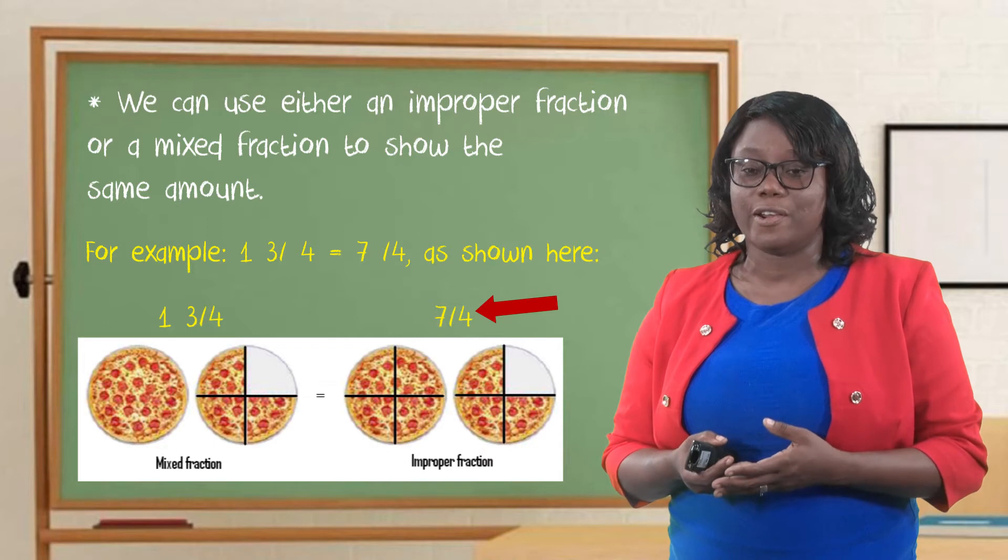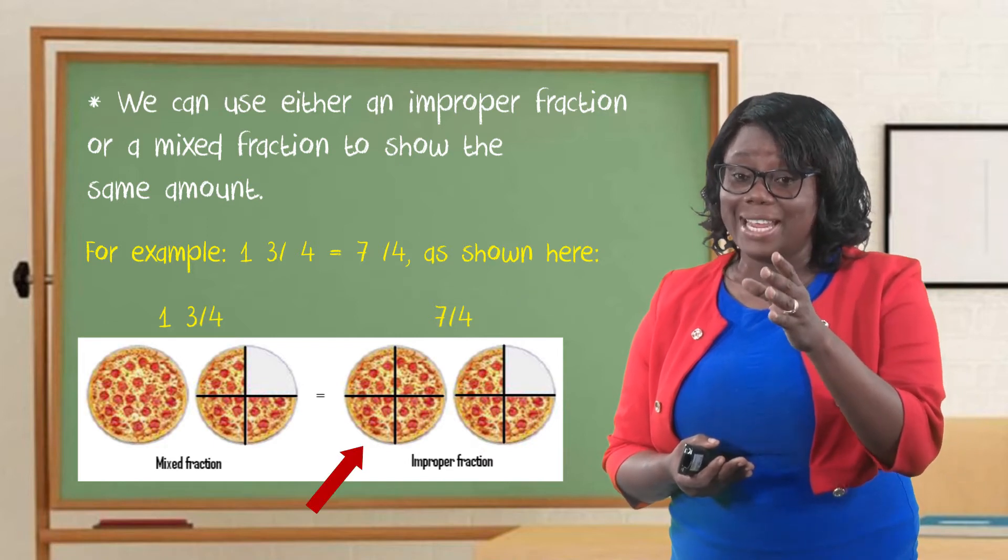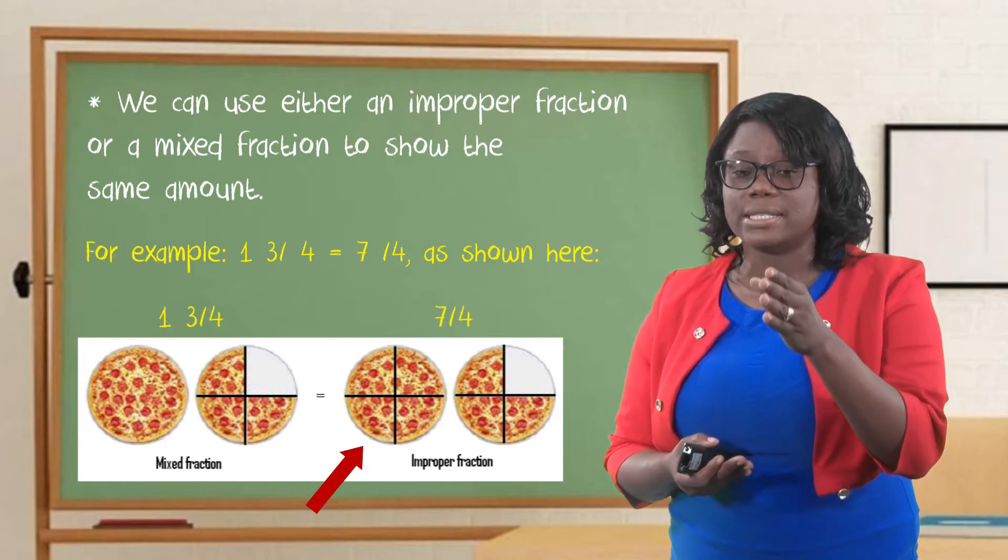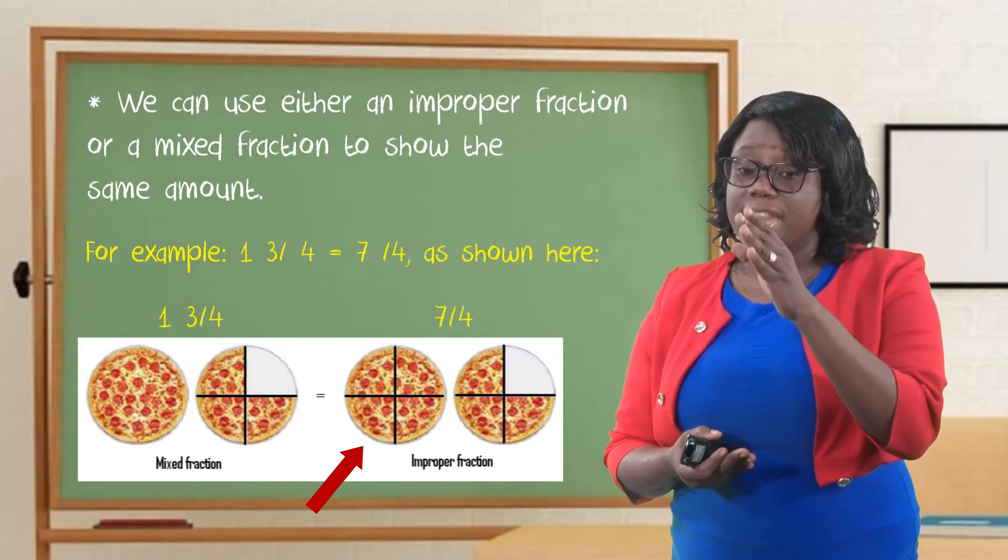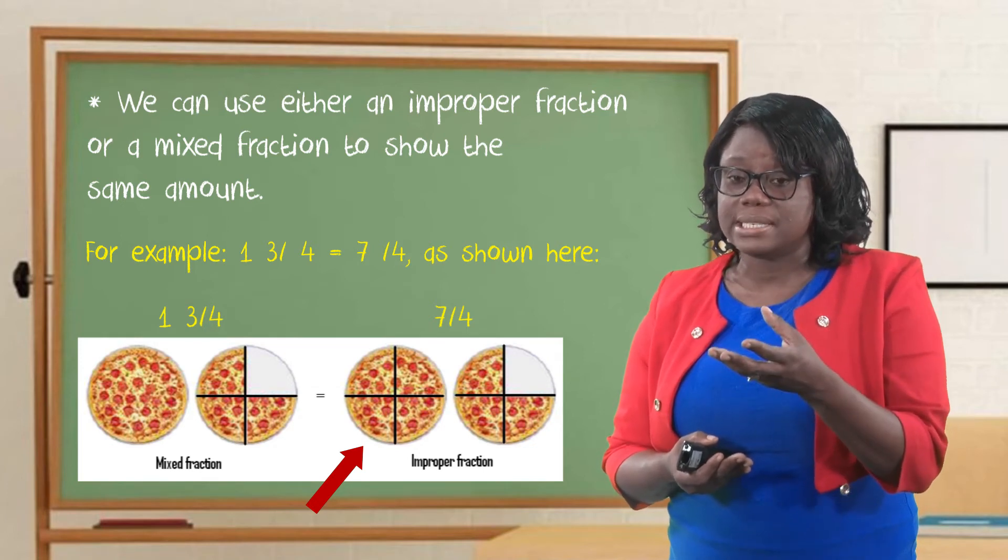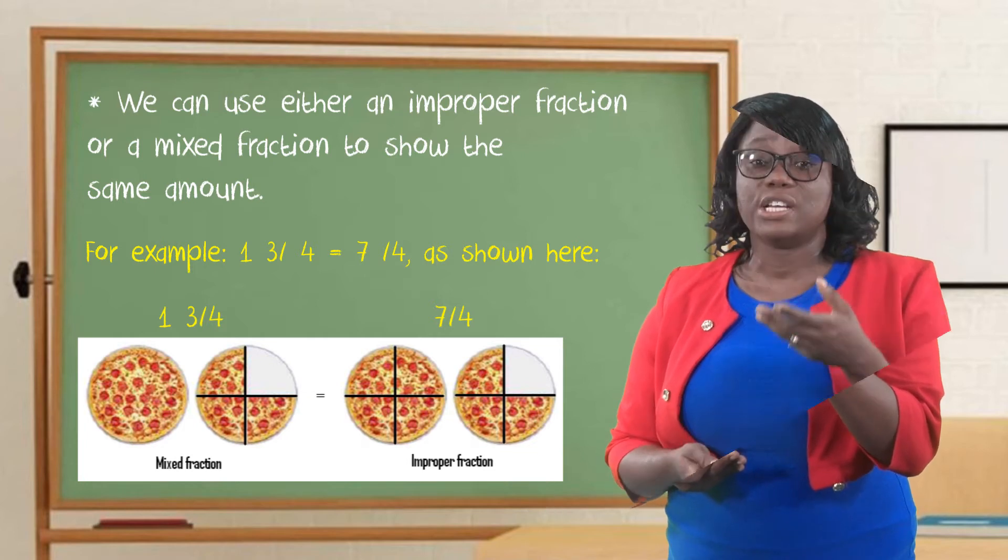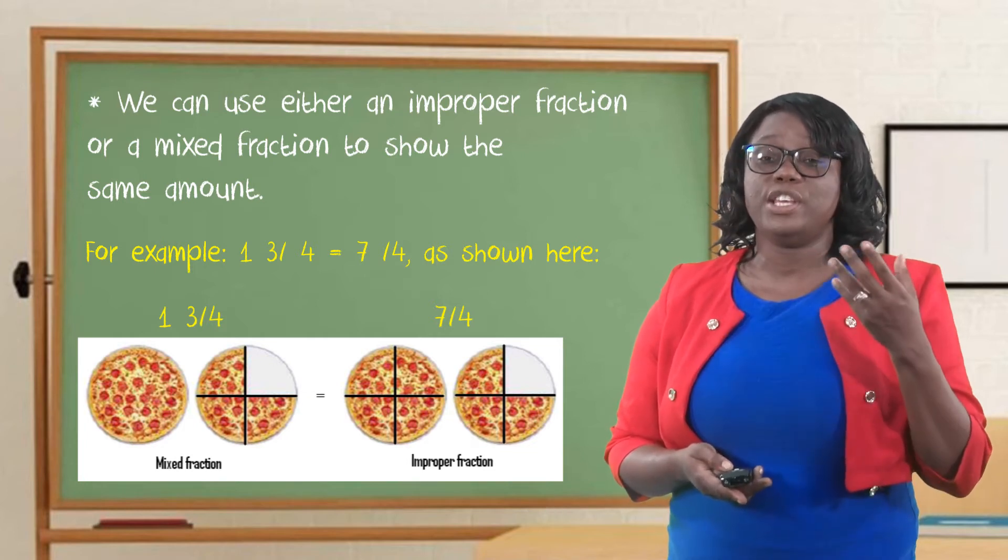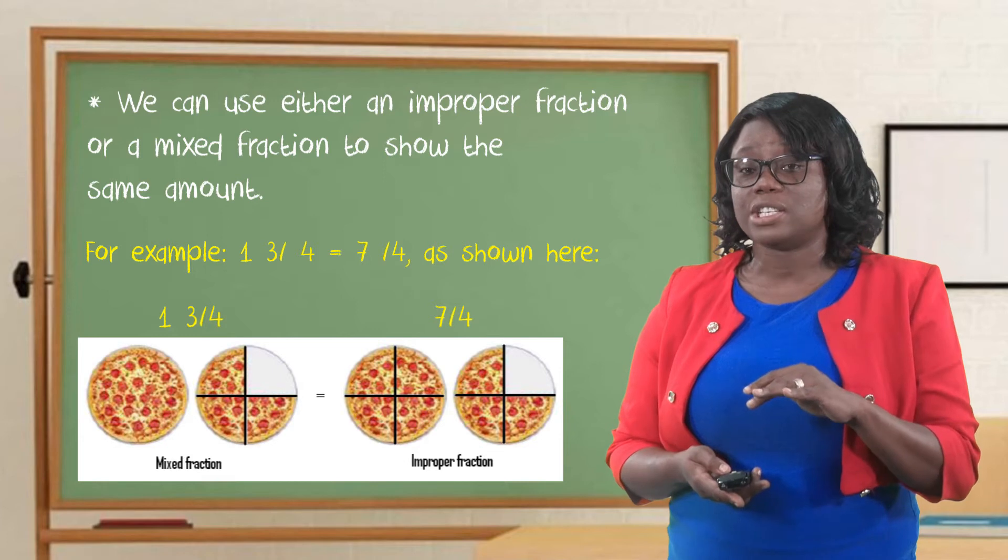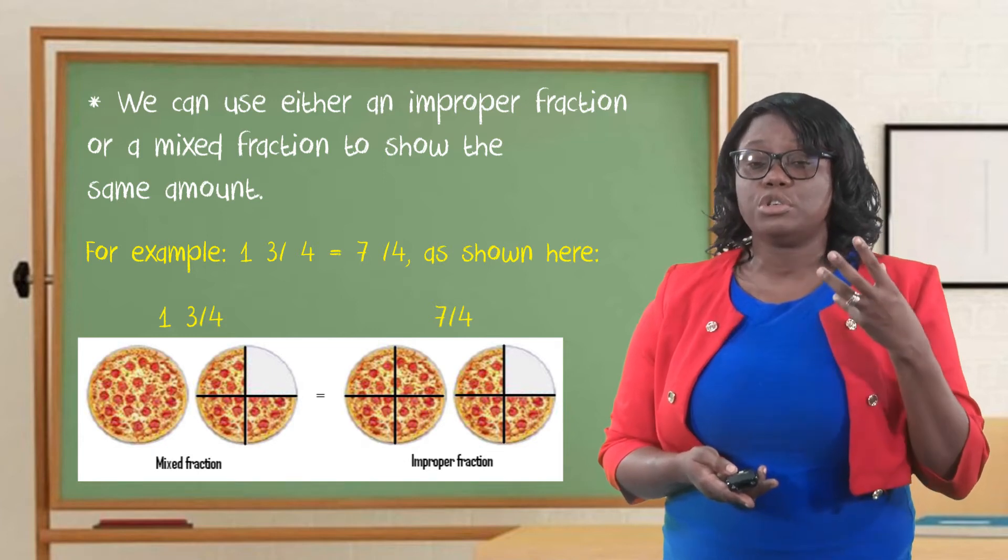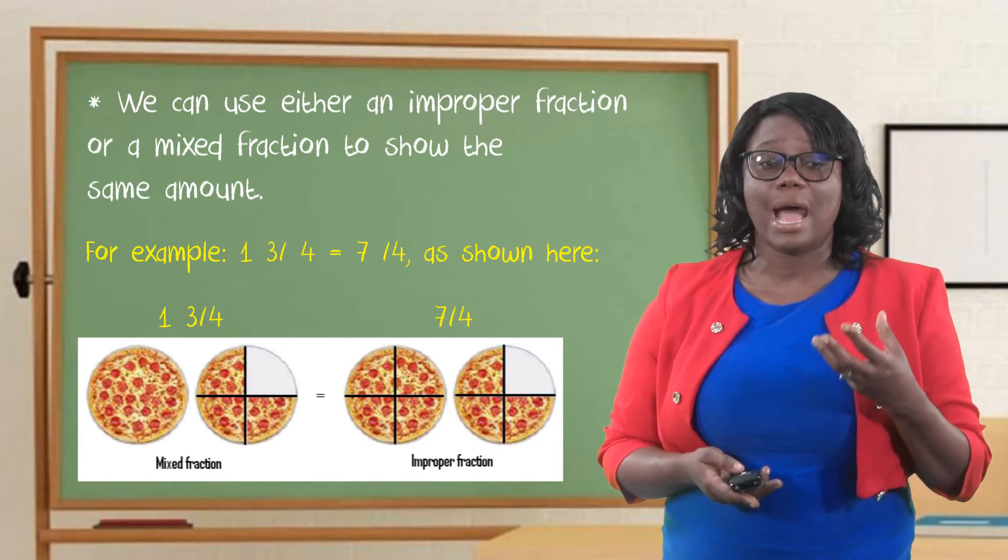But that one-and-three-quarters can also be written as seven-quarters, or seven-fourths. Look at the diagram there. The whole is divided into four-quarters. The next piece of pizza is divided into three-quarters. So we see that we can use an improper fraction and a mixed number to show the same amount.